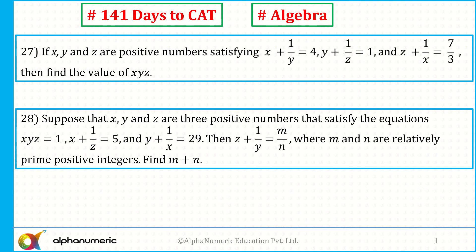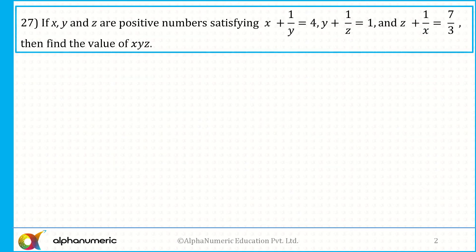Now let's start. It says if x, y and z are positive integers and the value of x plus 1 by y, the value of y plus 1 by z, and the value of z plus 1 by x are given. So there is a symmetry here. It's based on very simple laws — if you know that result you will get the answer quickly.